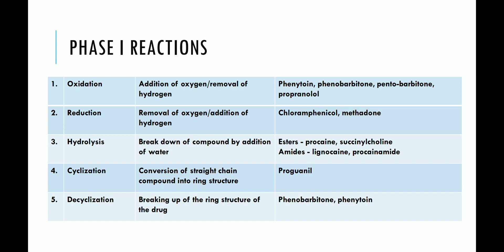Fourth is cyclization — conversion of a straight-chain compound into a ring structure. An example of a drug undergoing cyclization is proguanil. Fifth is decyclization — breakup of the ring structure of a drug. Drugs that undergo this include phenobarbitone and phenytoin.